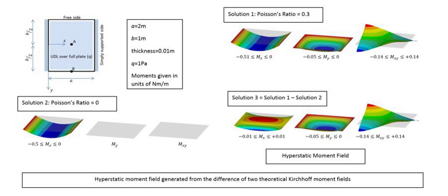Strain gauges can be used to experimentally determine the deformation of a physical part. A commonly used type of strain gauge is a thin flat resistor that is affixed to the surface of a part, and which measures the strain in a given direction. From the measurement of strain on a surface in three directions, the stress state that developed in the part can be calculated. Neutron diffraction is a technique that can be used to determine the subsurface strain in a part. The photoelastic method relies on the fact that some materials exhibit birefringence on the application of stress, and the magnitude of the refractive indices at each point is directly related to the state of stress at that point.